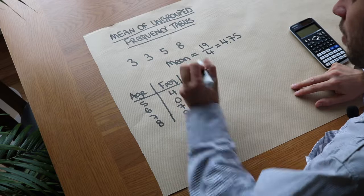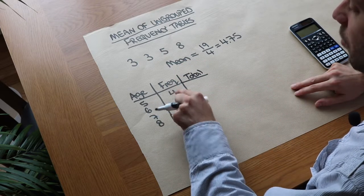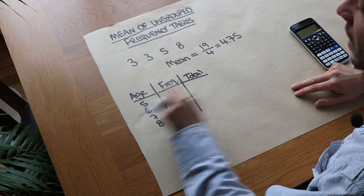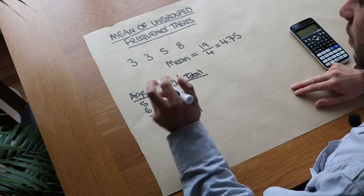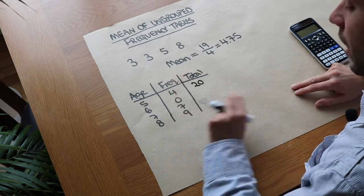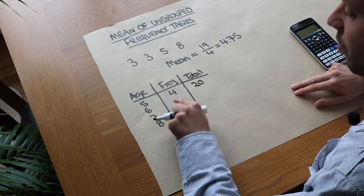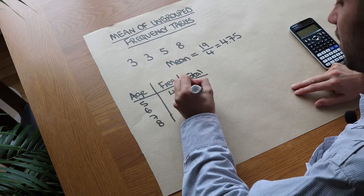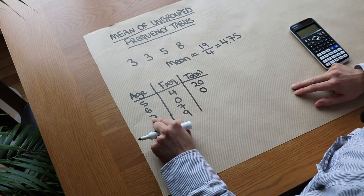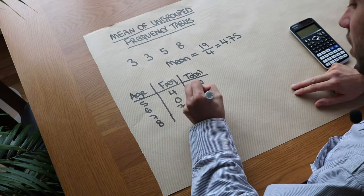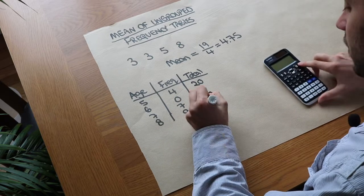If we've got four people age 5 — remember the frequency means the number of people — their total age would be 4 times 5, which is 20. If there are zero people age 6, their total age is 0 times 6, which is 0. Seven people age 7 gives a total of 49. And 9 times 8 is 72.